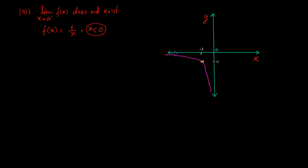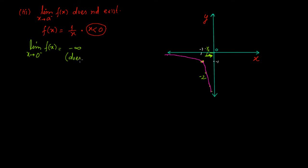The graph is a curve in the third quadrant region. Examining the limit as x approaches zero from the negative side — approaching zero from left to right — we see that the function goes on decreasing toward minus infinity. Taking x = -1/2 gives -2; x = -1/10 gives -10; x = -1/1000 gives -1000, and so on. So as we go close to zero, the function dips toward minus infinity. Therefore, the limit as x approaches zero from the negative side equals minus infinity, and hence it does not exist finitely.